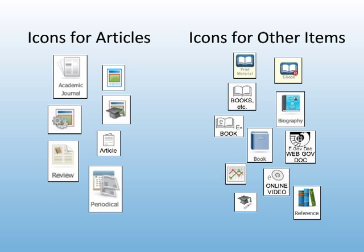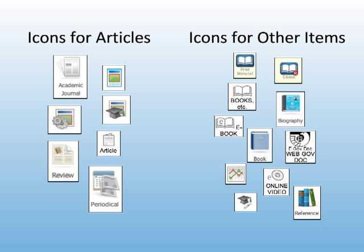Be careful, though. Some databases include more than just journal articles. They may contain newspaper articles, book chapters, conference papers, or dissertations. Usually, though, the database will use a small icon or text to specify what it is you're looking at so you can be sure.